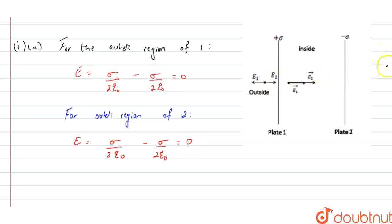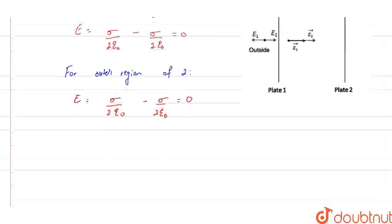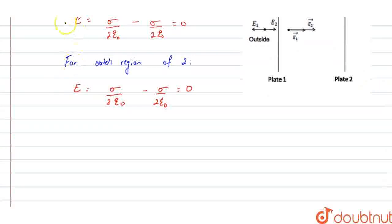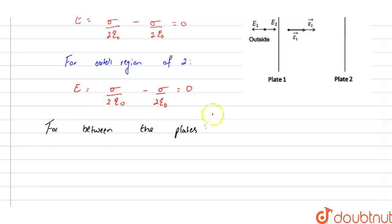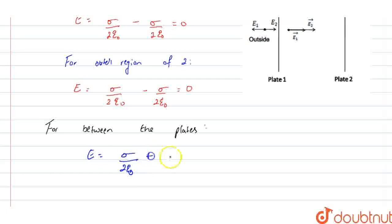For the inner region between the plates, the electric fields due to the two charged plates add up. So E equals sigma by 2 epsilon naught plus sigma by 2 epsilon naught, which is equal to Q by epsilon naught times A.